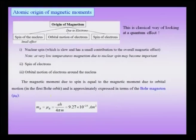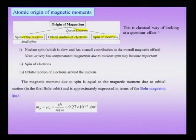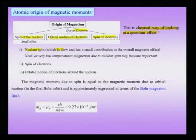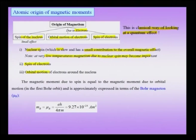Next we take up the atomic origins of magnetic moments. There are three atomic origins: one due to the nucleus (nuclear spin) and two due to electrons (electron spin and orbital motion of electrons). The spin is not like a rotating top — it is the intrinsic quantum mechanical spin. Nuclear spin has a small contribution and is typically ignored in most discussions, though at very low temperatures magnetization due to nuclear spin may become important.